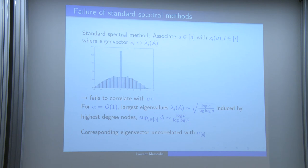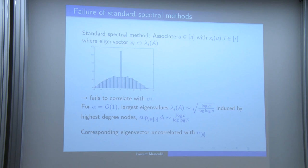There is a strong parallel between this and the BBP (Baik-Ben Arous-Péché) phase transition in random matrix theory. The canonical model is the Wigner random matrix: a Hermitian matrix with independent Gaussian entries W_{ij} ~ N(0, sigma^2/N) for i < j. Wigner showed in the 1950s that the empirical spectral distribution converges to the semicircle law. Baik, Ben Arous, and Péché characterized what happens to the spectrum when you add a fixed-rank matrix P to a Wigner matrix W. Introducing R_0 as the largest index such that lambda_i(P)^2 exceeds sigma^2, the BBP transition says: if i ≤ R_0, the eigenvalue of W + P emerges from the bulk and equals lambda_i(P) + sigma^2 / lambda_i(P); if i > R_0, the eigenvalue is lost in the bulk.